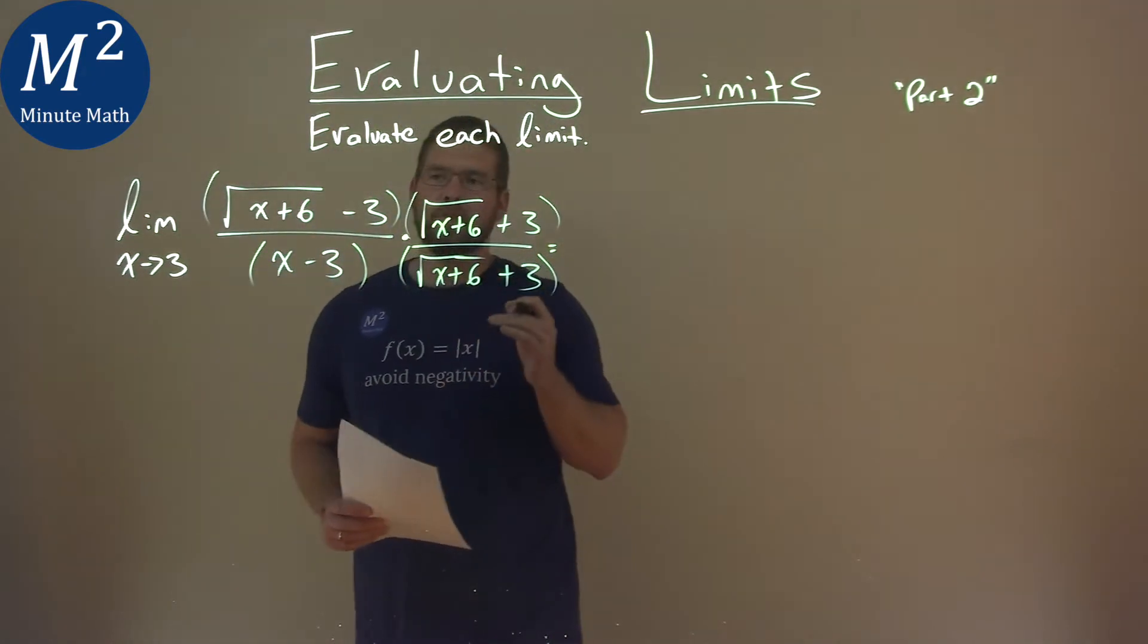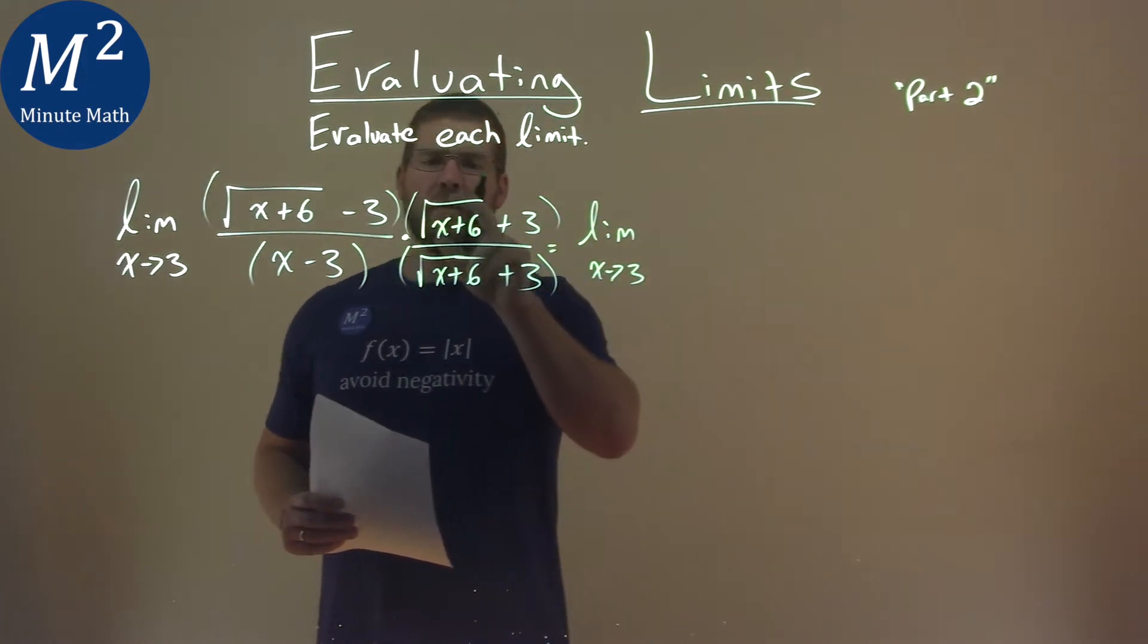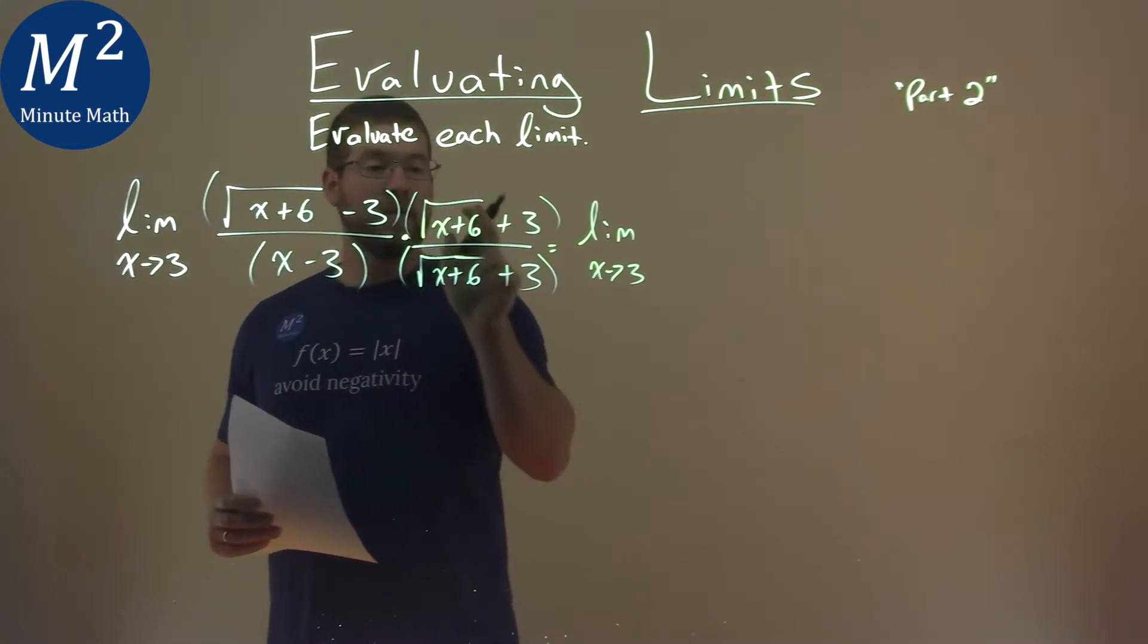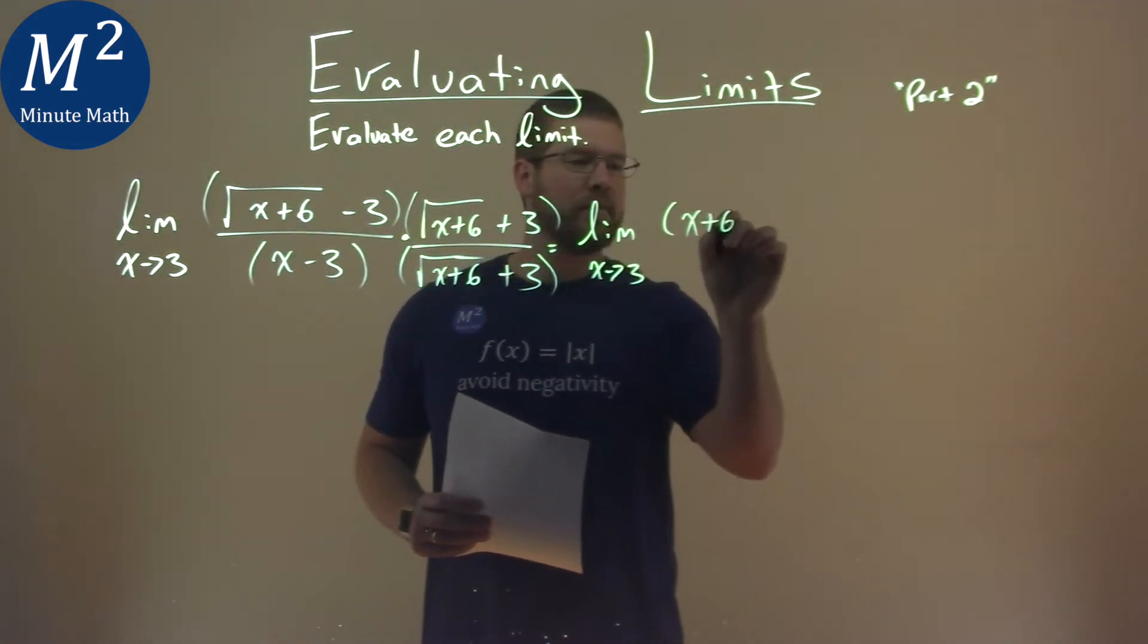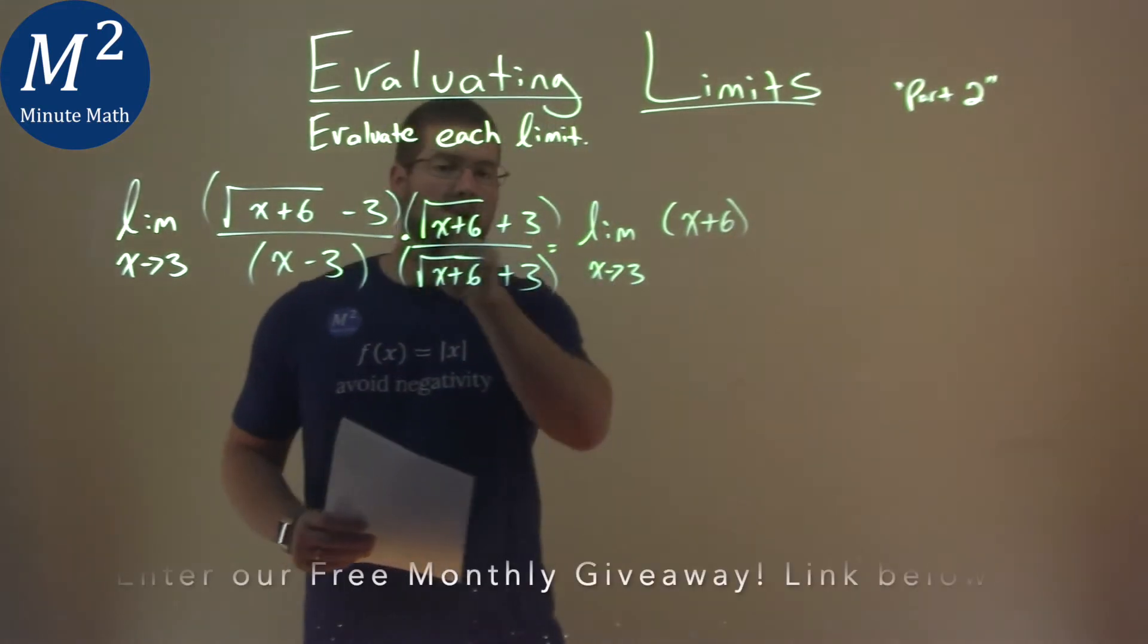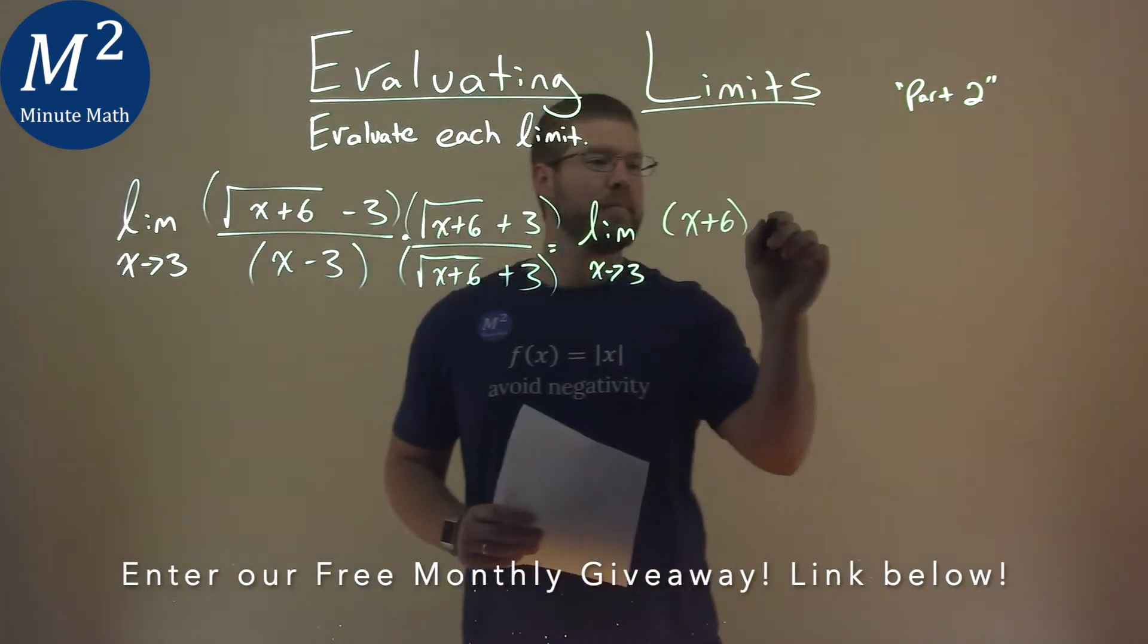So what happens when we do this? Well, we take the limit as x approaches 3 and the numerator will be square root of x plus 6 times square root of x plus 6 is just x plus 6. The middle parts when we FOIL cancel out and so we just do negative 3 times 3 which is negative 9.